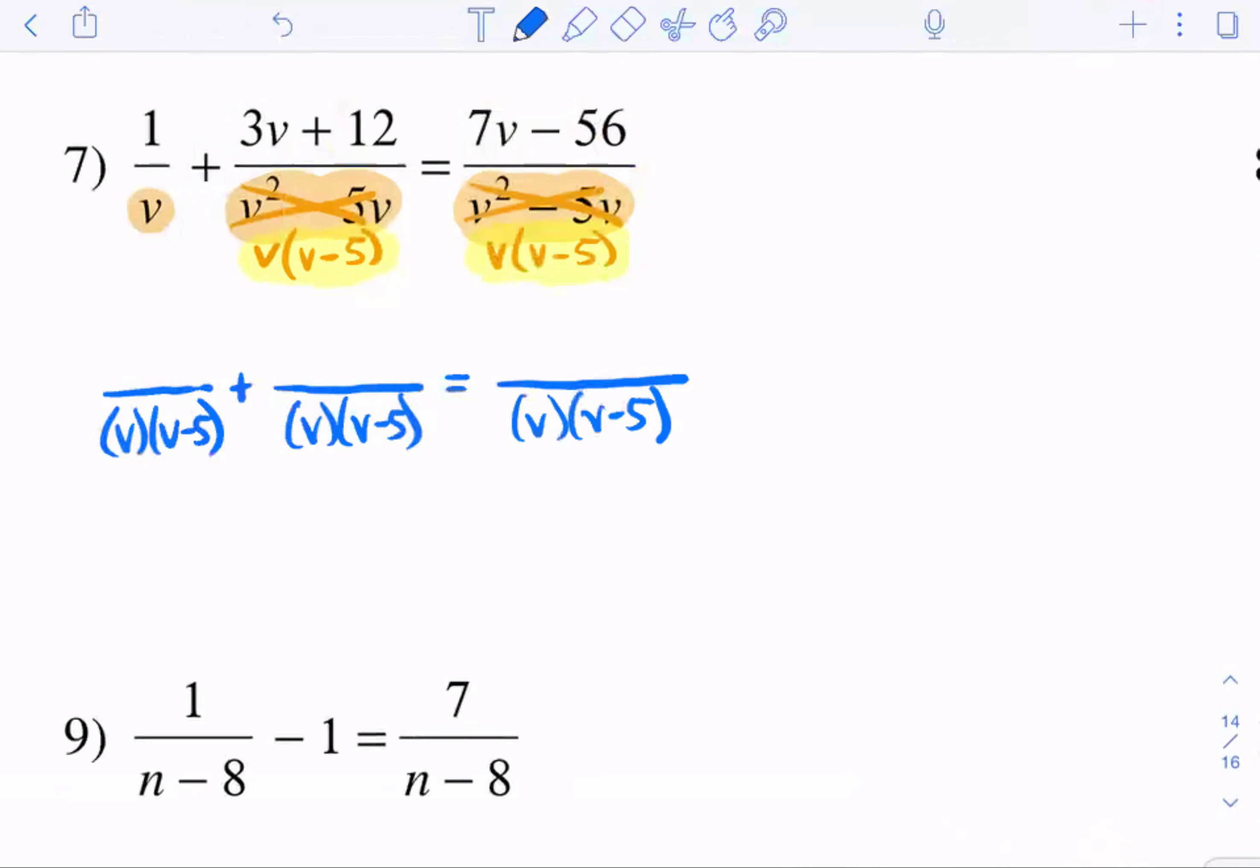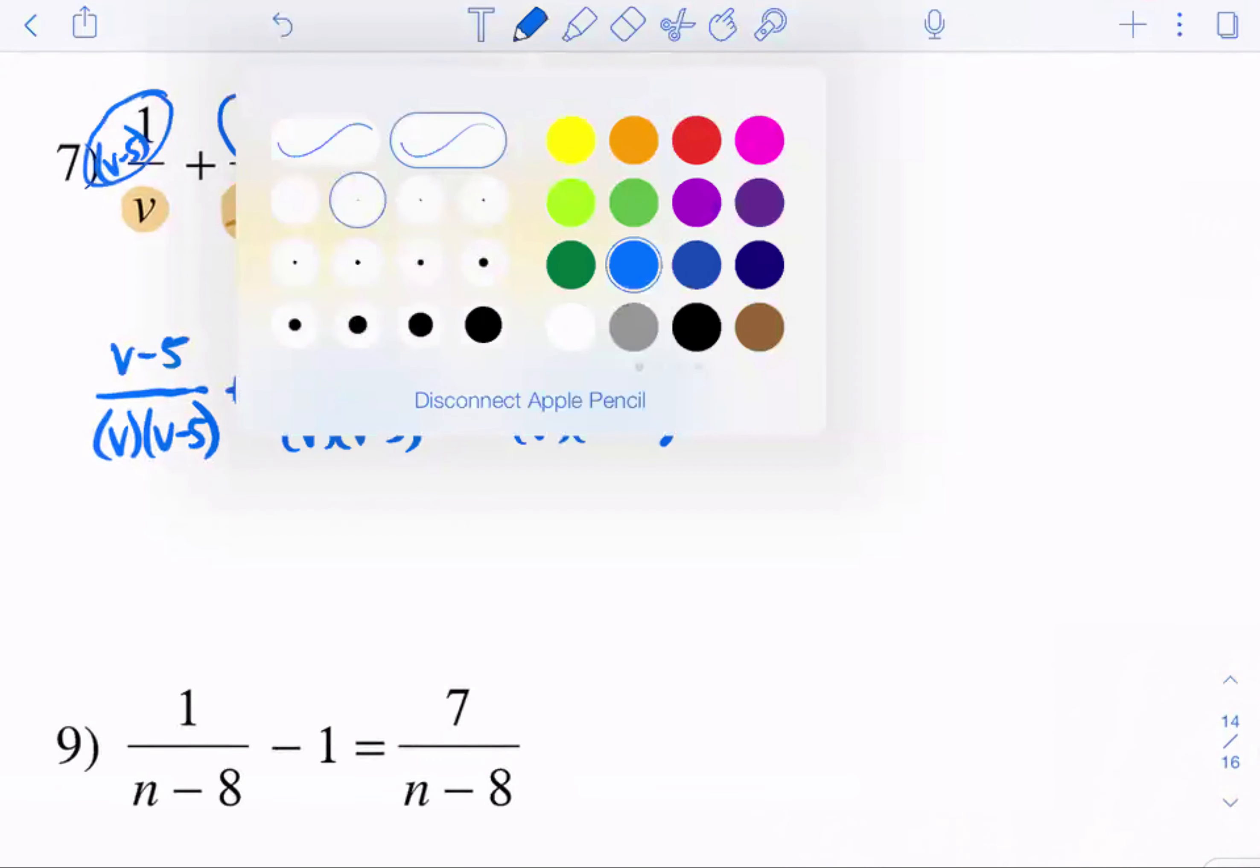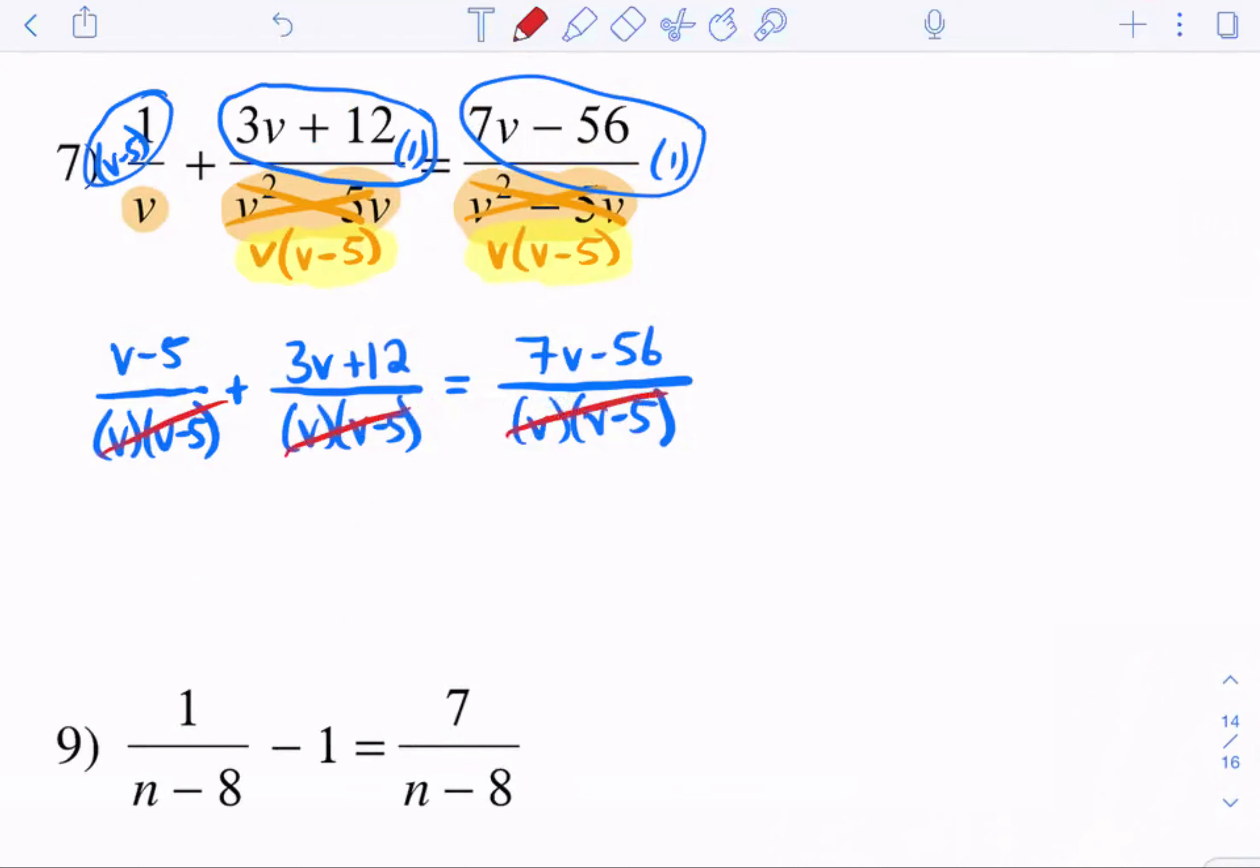If you look at the first one, it has a v, but it's missing the v minus 5. So I have to multiply by v minus 5. v minus 5 times 1 is just v minus 5. Over here in the next one, this is already v minus 5 times v. So this one only needs to be multiplied by 1. So 1 times all of this is 3v plus 12. And then the same thing for this last one. This one's already v times v minus 5 and it matches. So this only needs to be multiplied by 1. So 7v minus 56.